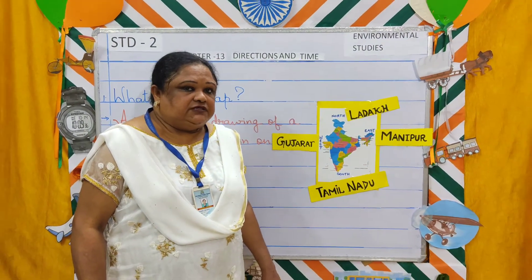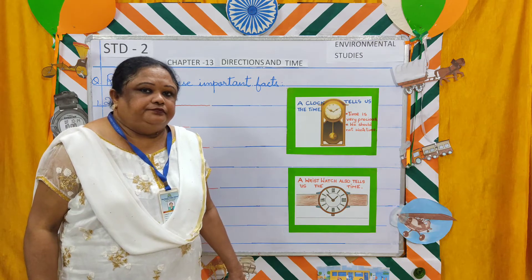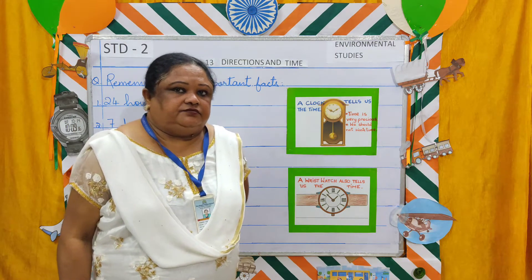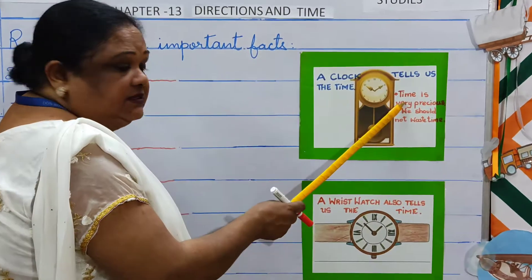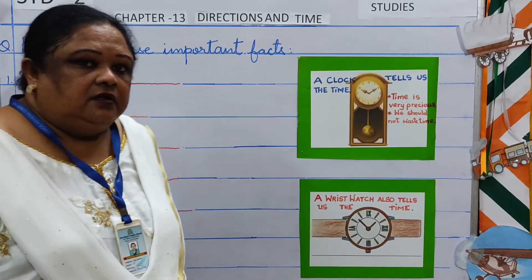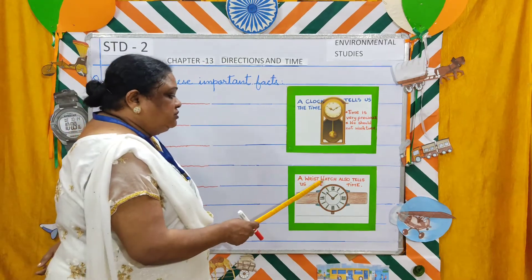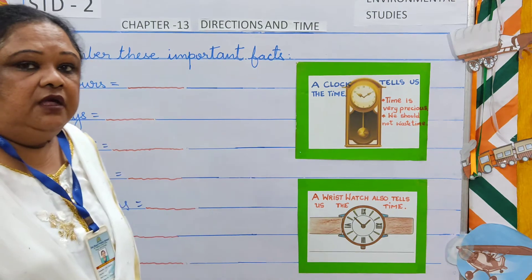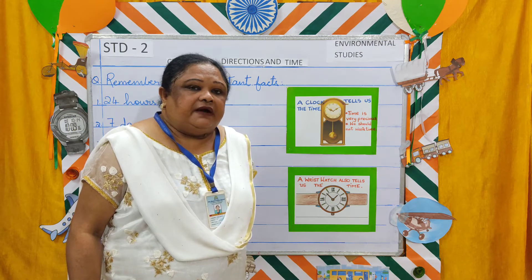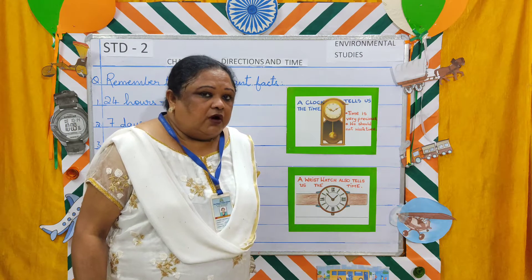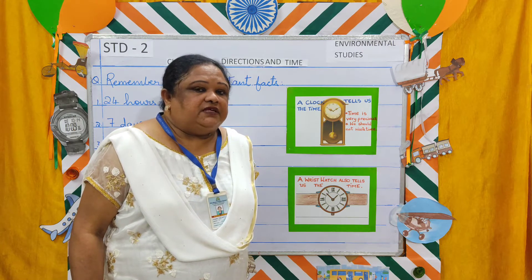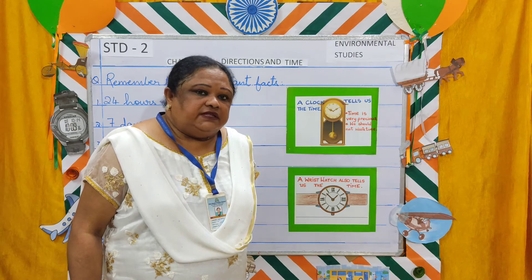Now coming to time: a clock tells us the time in hours, minutes, and seconds. Time is very precious — we should not waste time. A wrist watch also tells us the time. We wear wrist watches at home, for school, and many other places, because it always reminds us of the time — to go out, to return to places, to go to school, to get up, to eat, and to sleep. Time plays a very important role in all these activities in our life.